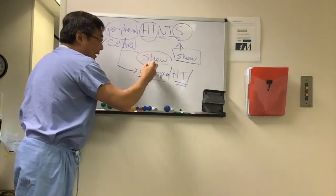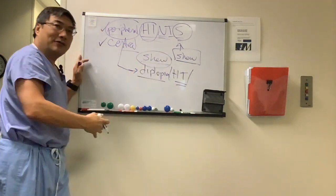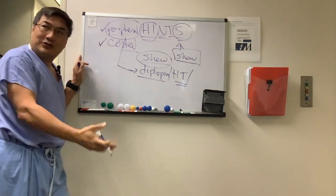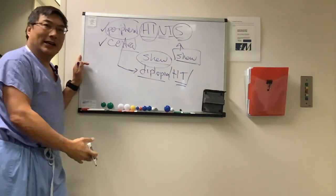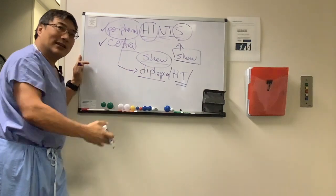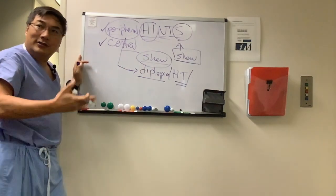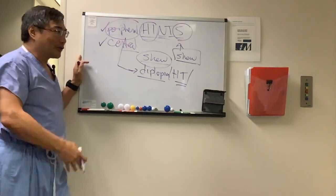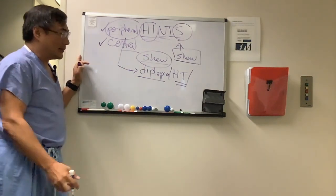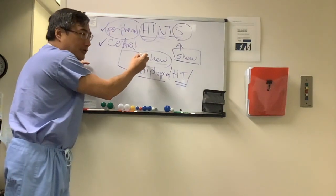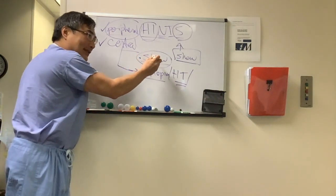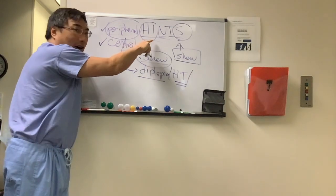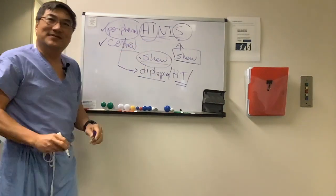In the outpatient setting, you do have to do the three-step test, the ductions, the versions, and the cover test, because there are a lot of things that look like a skew but aren't — myasthenia, thyroid, partial cranial neuropathies. There's no diagnostic test to prove that it's skew. But in the ER, just HINTS.